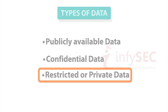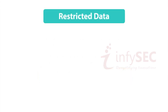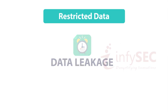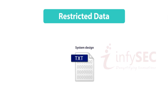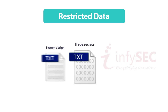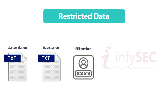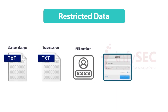When the data is super sensitive — in other words, leakage leads to serious issues — it is known as restricted or private data. Examples include a company's system designs and trade secrets, financial account PIN numbers, an email password, and the personal or medical report of a person.